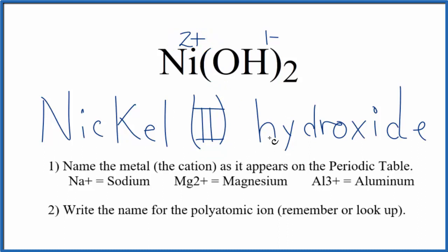If you were given the name and asked to write the formula, you know nickel has a two plus ionic charge and that you'll need two of these one minus hydroxides to balance the charge out and have a net charge of zero.